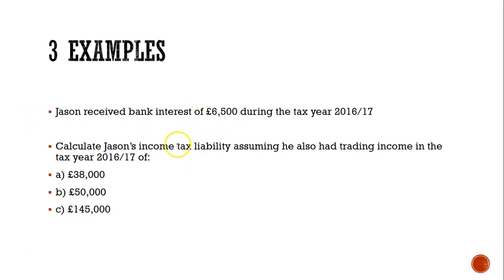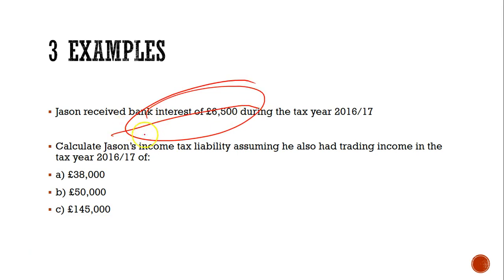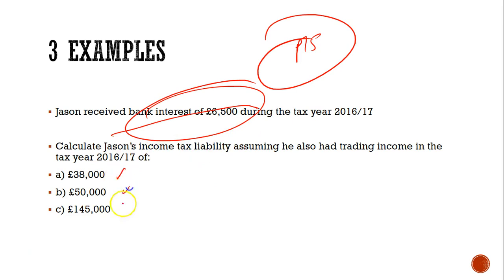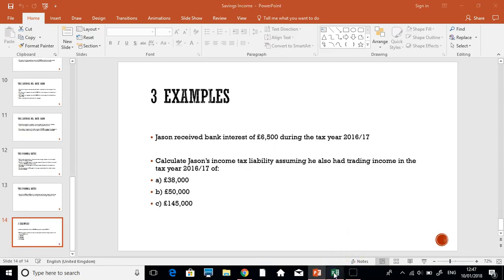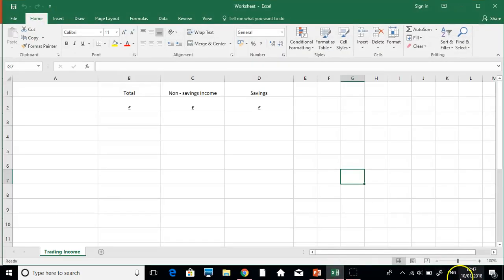Let's look at an example — this is on page 75 of your textbook. We have Jason, who has bank interest of six thousand five hundred pounds. We're going to go through all three of his income tax liability scenarios very quickly. I'm going to use a worksheet to work out what income tax liability he has due.